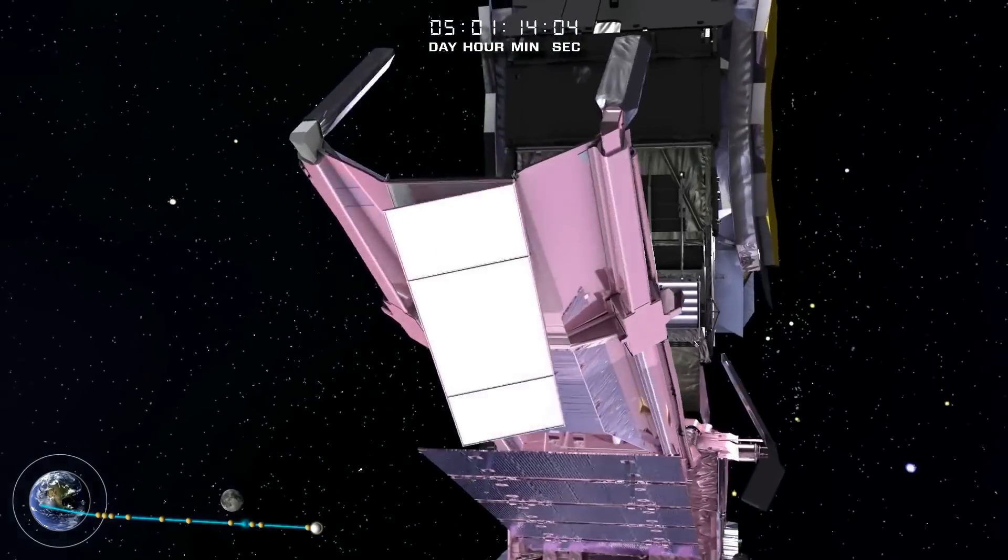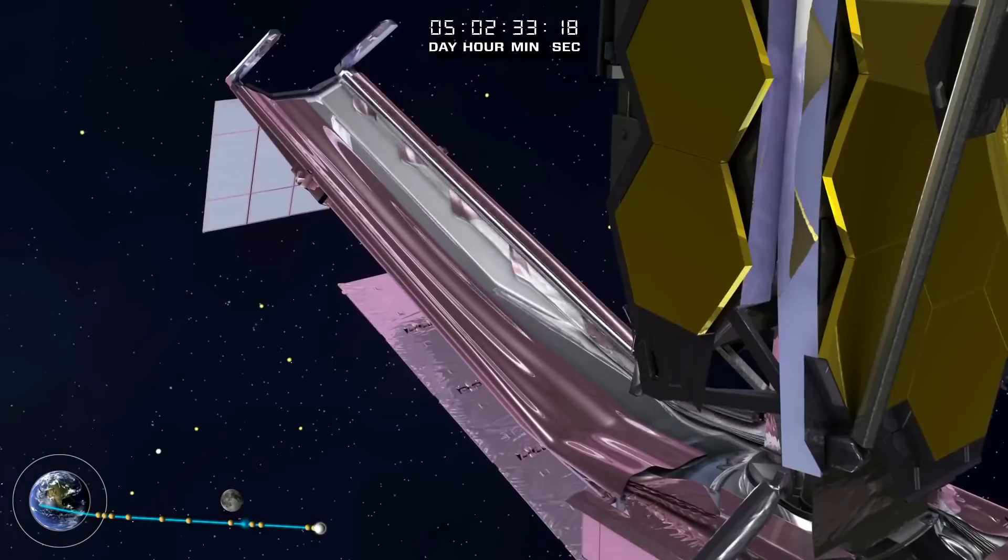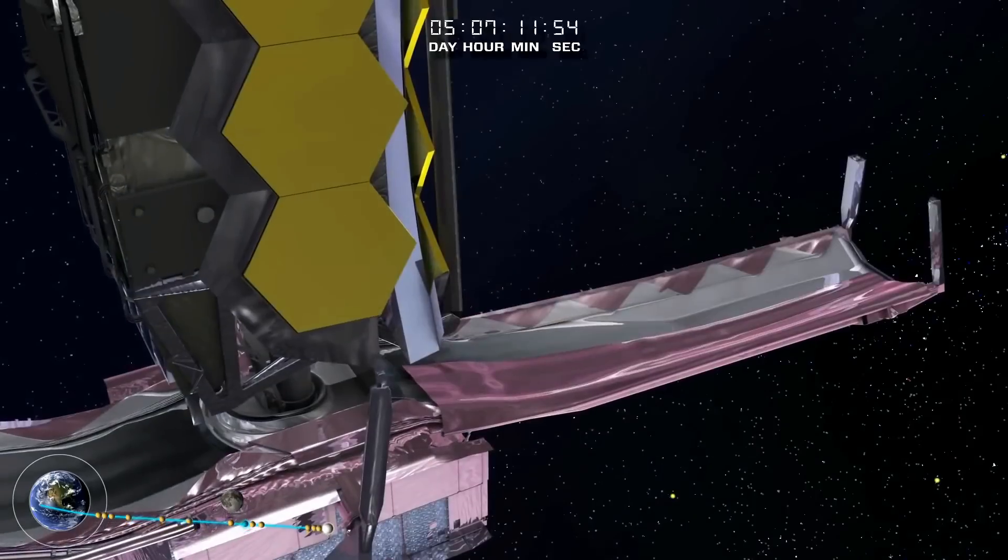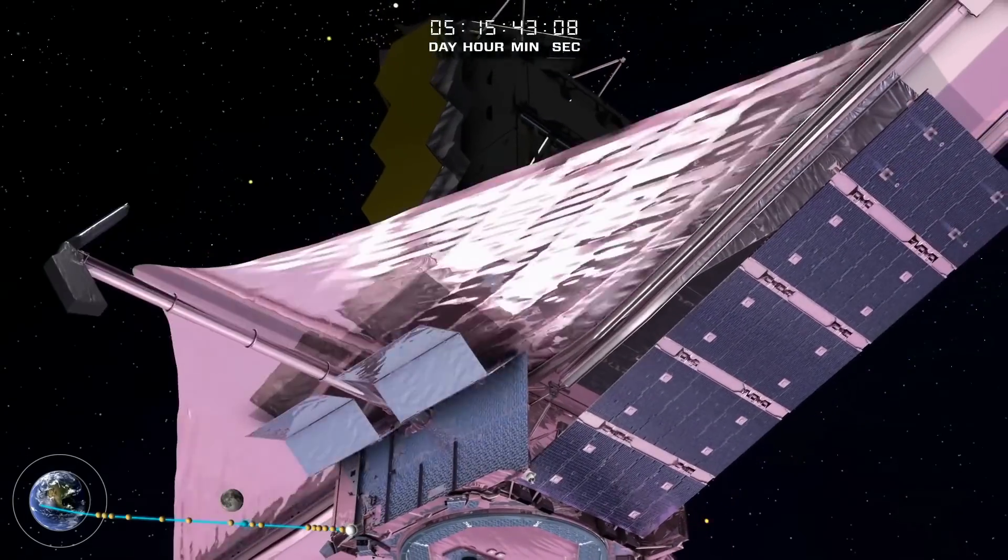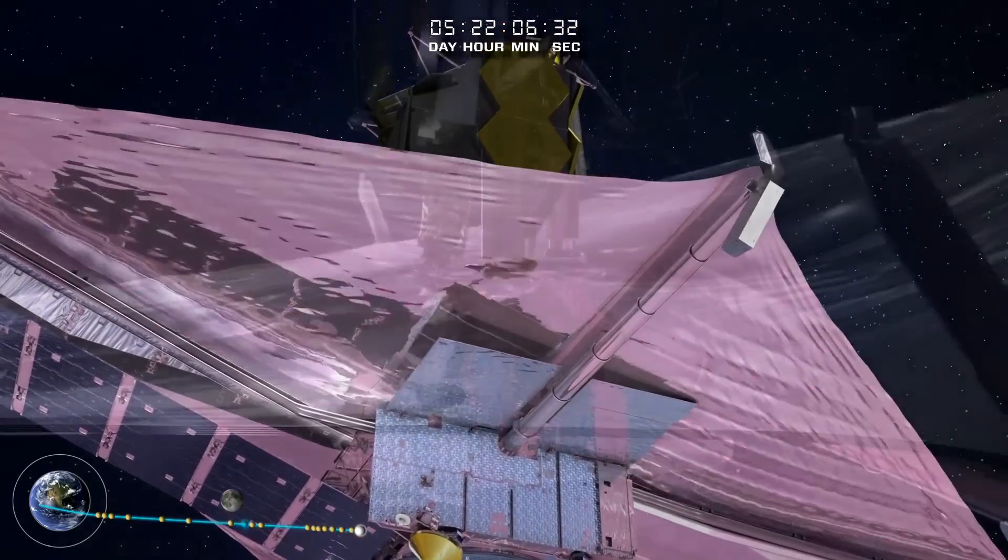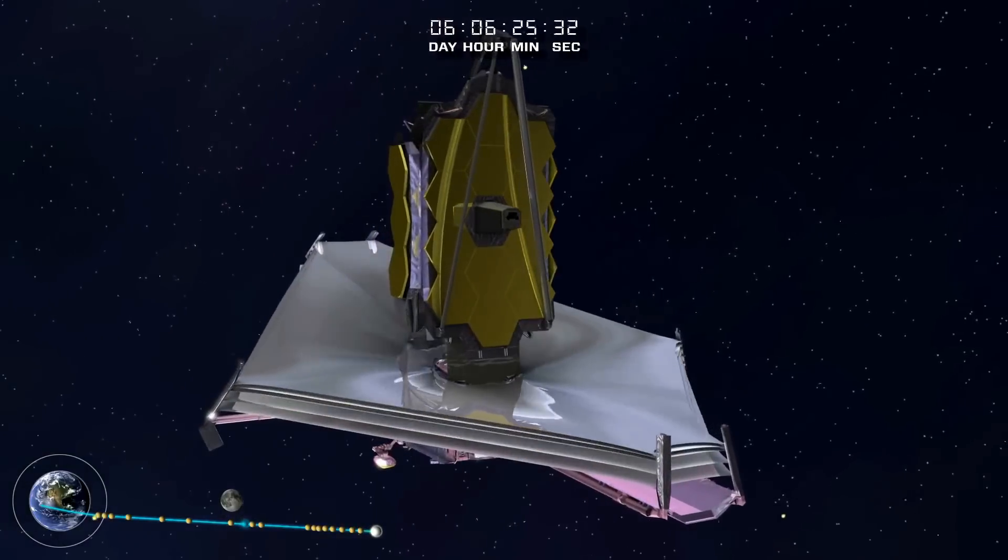Even though the Ariane 5 rocket which launched the telescope has one of the widest payload fairings, some 5.4 meters, it still wasn't big enough to hold James Webb in its full form. So the telescope had to be folded so it could fit into the launcher.